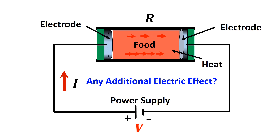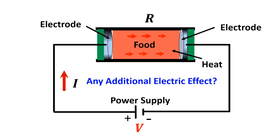Is there any additional effect? Within the applied voltage and current, it is a common question whether Ohmic heating provides an additional electrical effect on microbial inactivation.